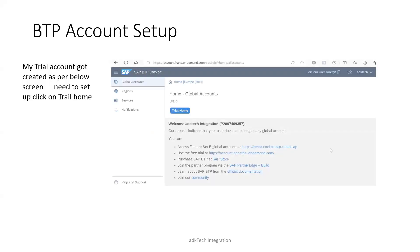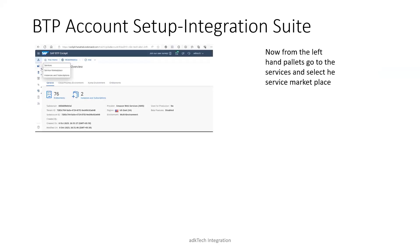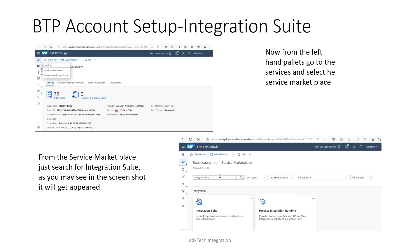My trial account has been created. Now we need to configure the integration suite. For that, we need to go into the left panel, select Services, and click on Service Marketplace. When you click on Service Marketplace, you will have a screen where you need to search for 'integration suite'. Once you type it, you will have the options in front of you — simply click on Integration Suite.